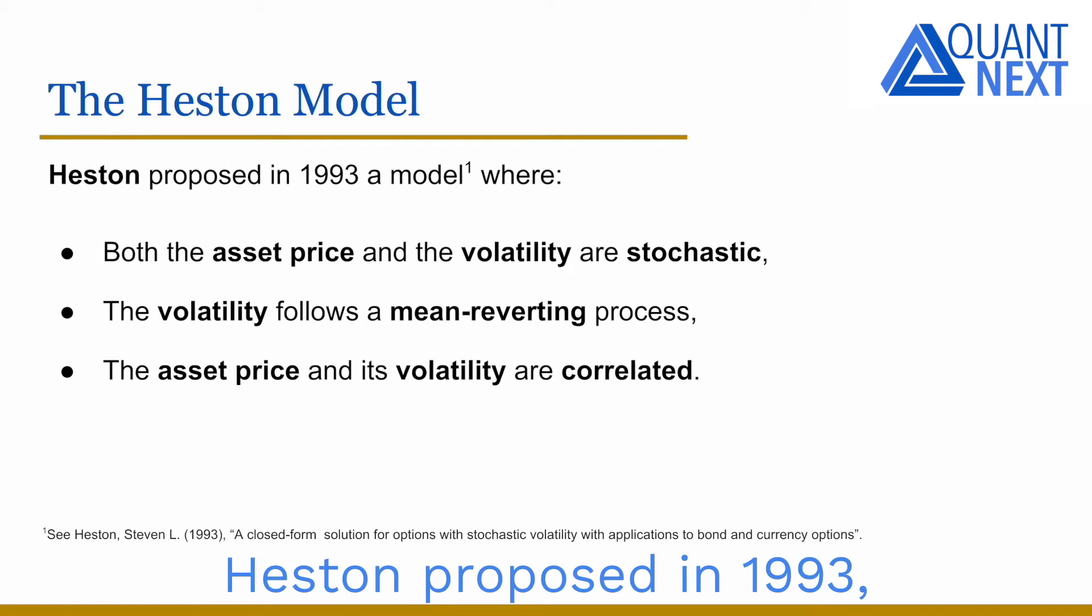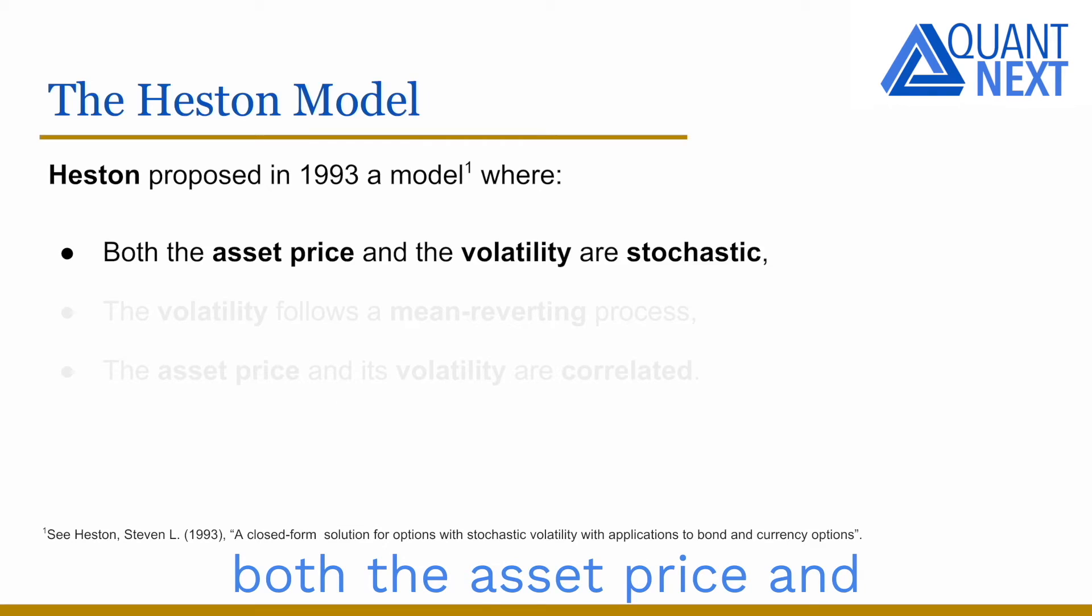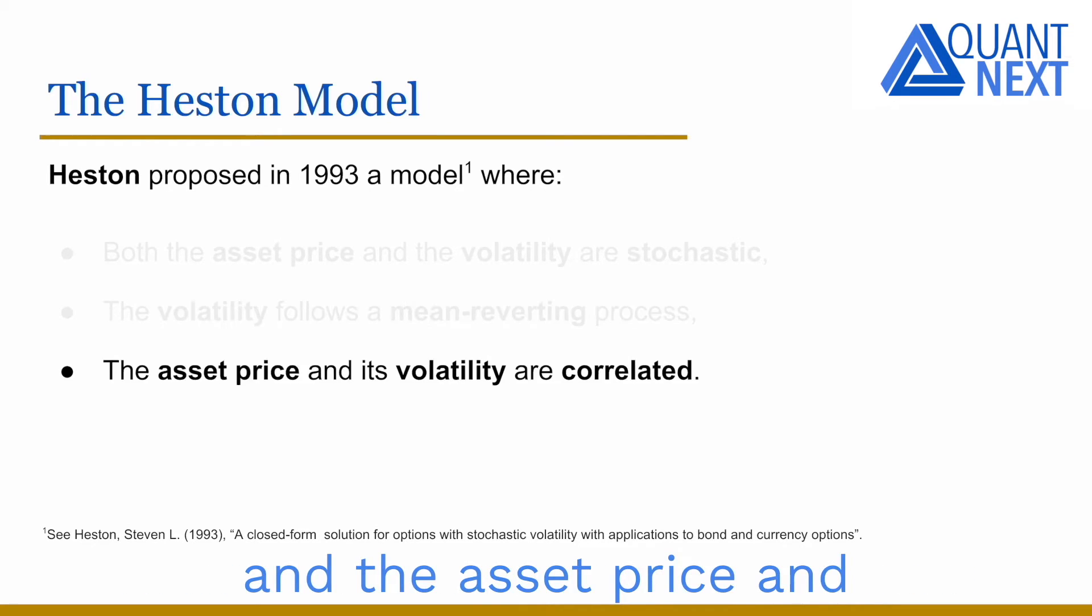Heston proposed in 1993 a model to value options where both the asset price and the volatility are stochastic. In this model, the volatility follows a mean-reverting process and the asset price and its volatility are correlated.